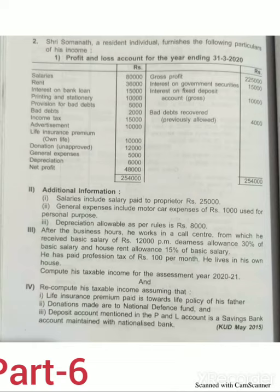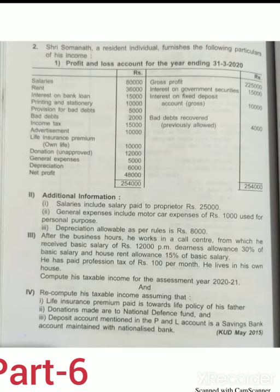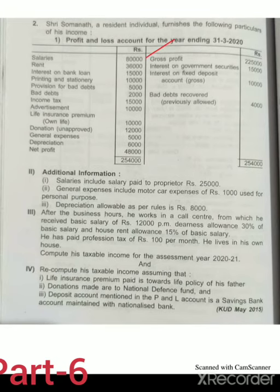P&L account for the year ending 31-3-2020 is given. The information is: salary 80,000; rent 36,000; interest on bank loan 15,000; printing and stationery 10,000; provision for bad debts 5,000; bad debts 2,000; income tax 15,000; advertisement 10,000.